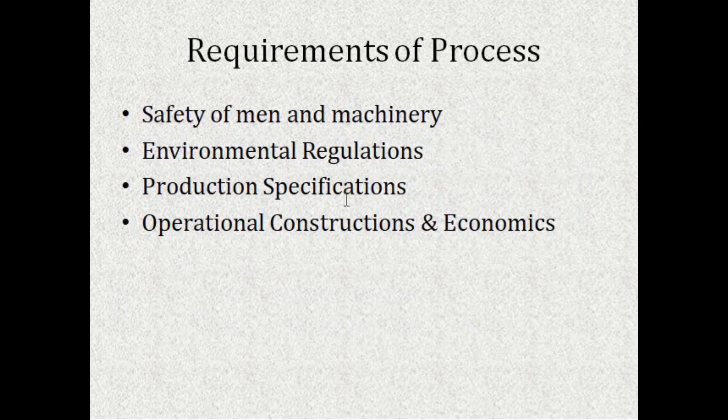Now let us see what are the requirements of a process. To convert material from one state to another, we have to be aware about the safety of men and machinery. We have to be aware about the environmental regulations as well, so that there is not too much pollution and the environment is not harmed by that process. We have to know about the production specifications, the operational constructions, as well as the economics.